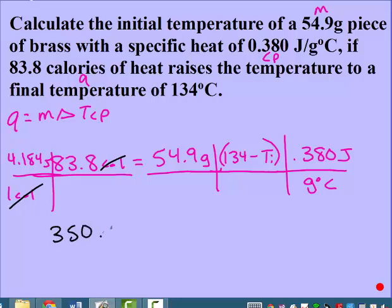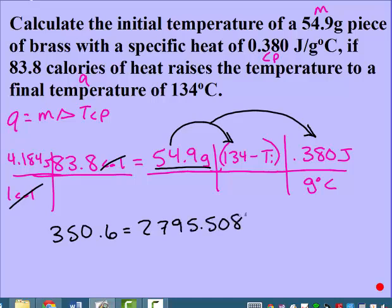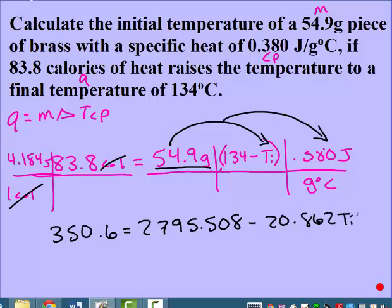83.8 times 4.184 gives me 350.6. On the other side, I need to distribute, so it's 54.9 times 134 times 0.380, and then we do the same thing: 54.9 times Ti times 0.380 gives me negative 20.862 Ti. Combine like terms.